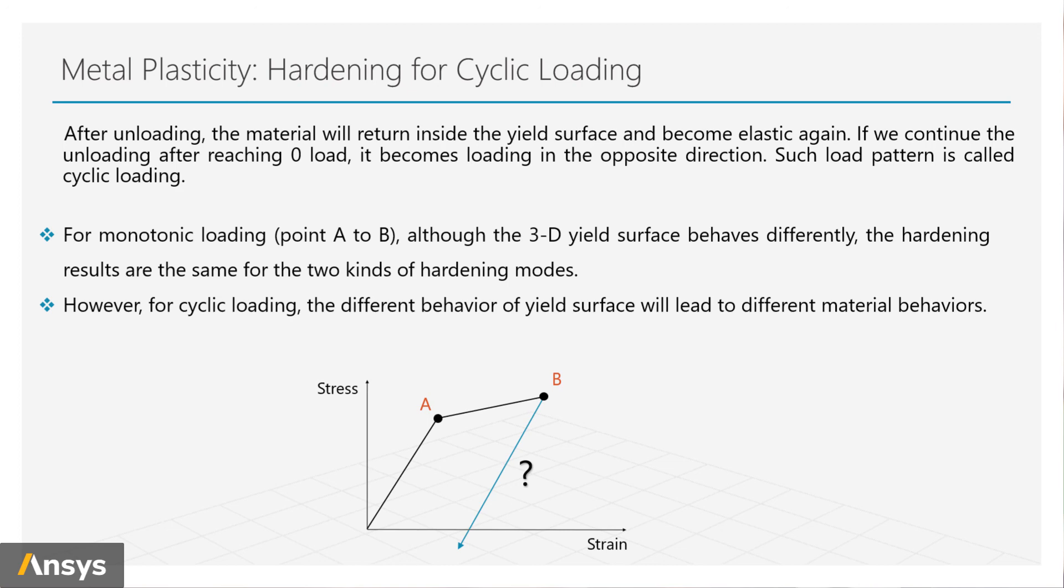For monotonic loading, like from point A to B here, although the 3D yield surface behaves differently, the hardening results are the same for isotropic and kinematic hardening rules.